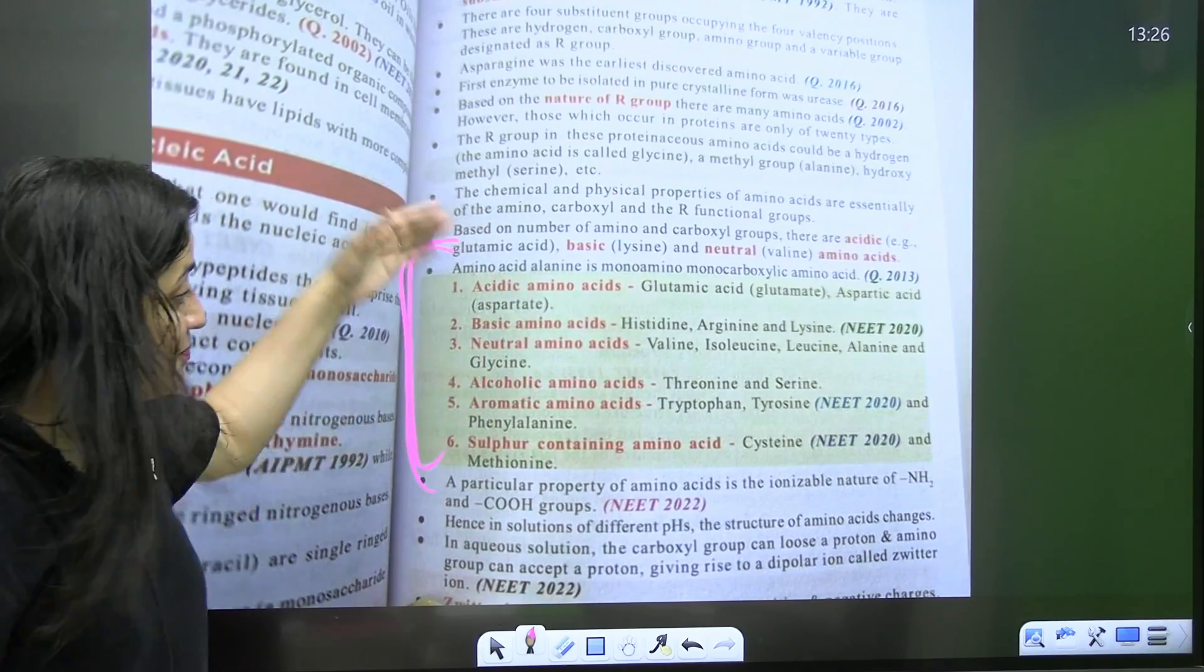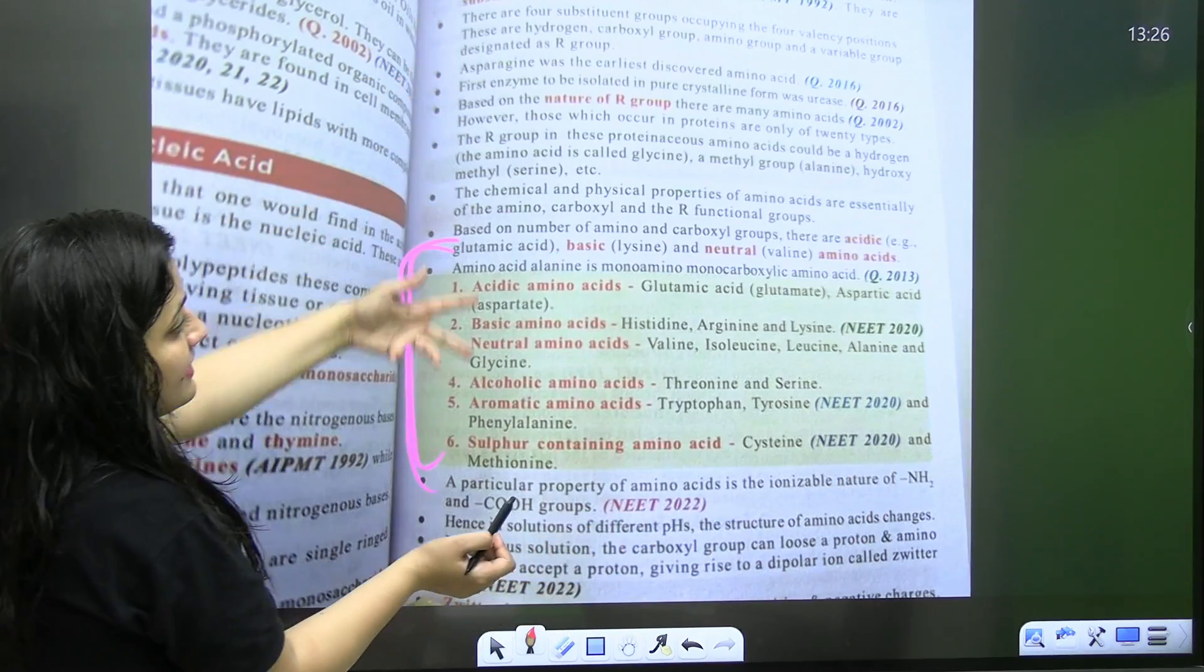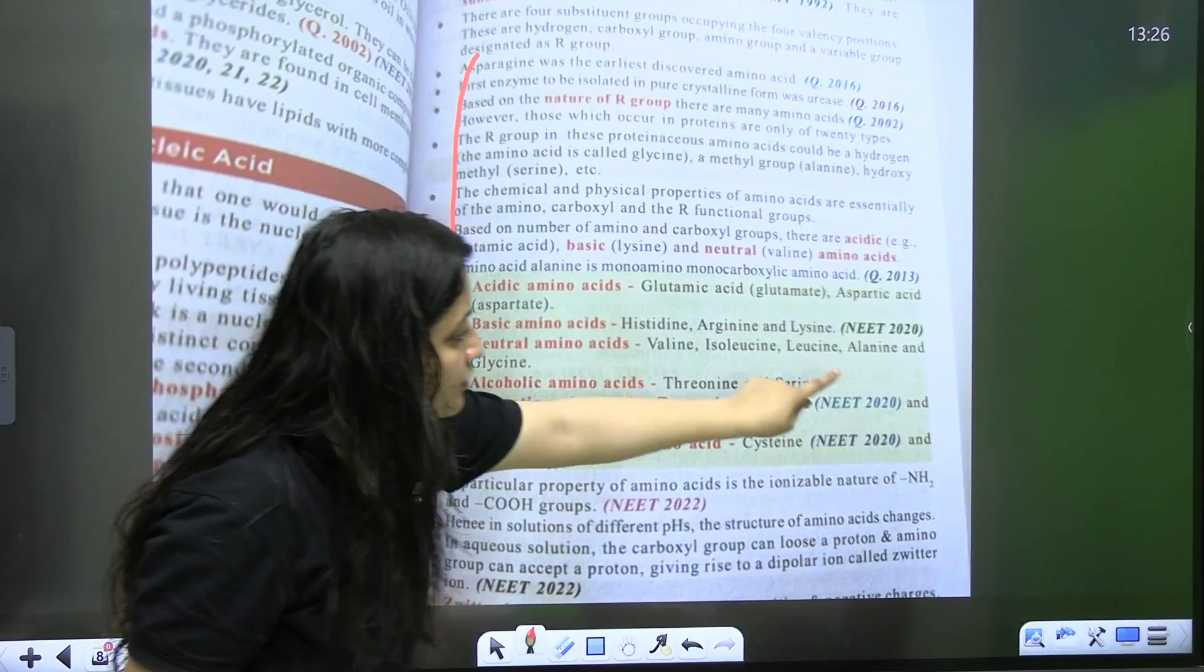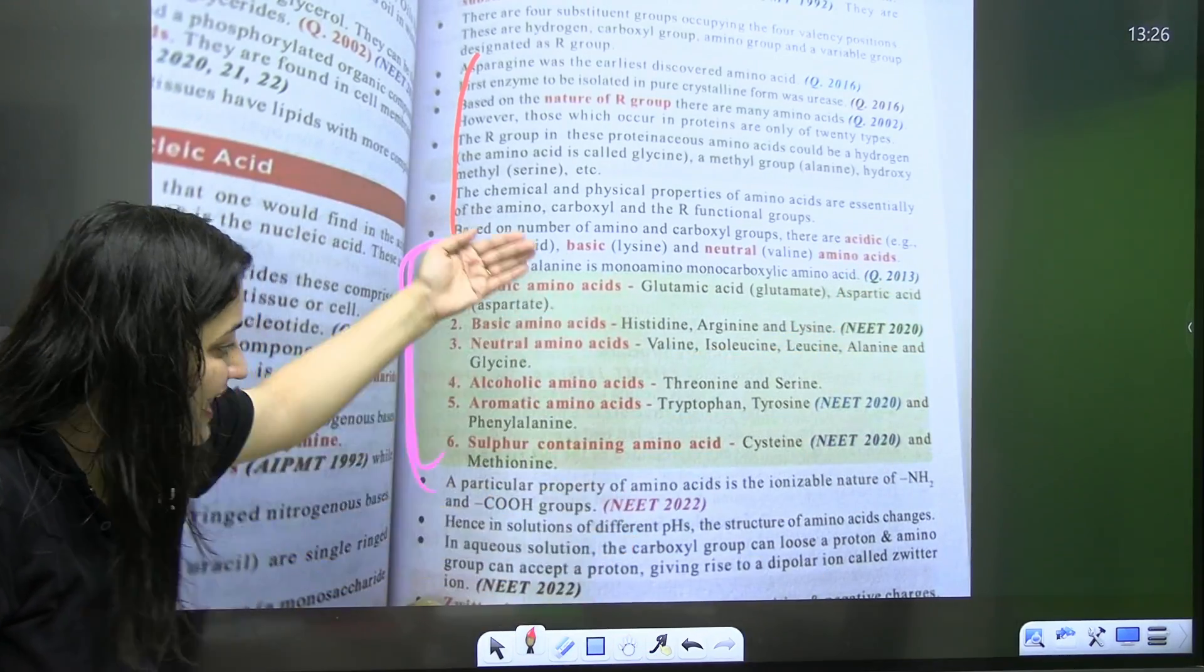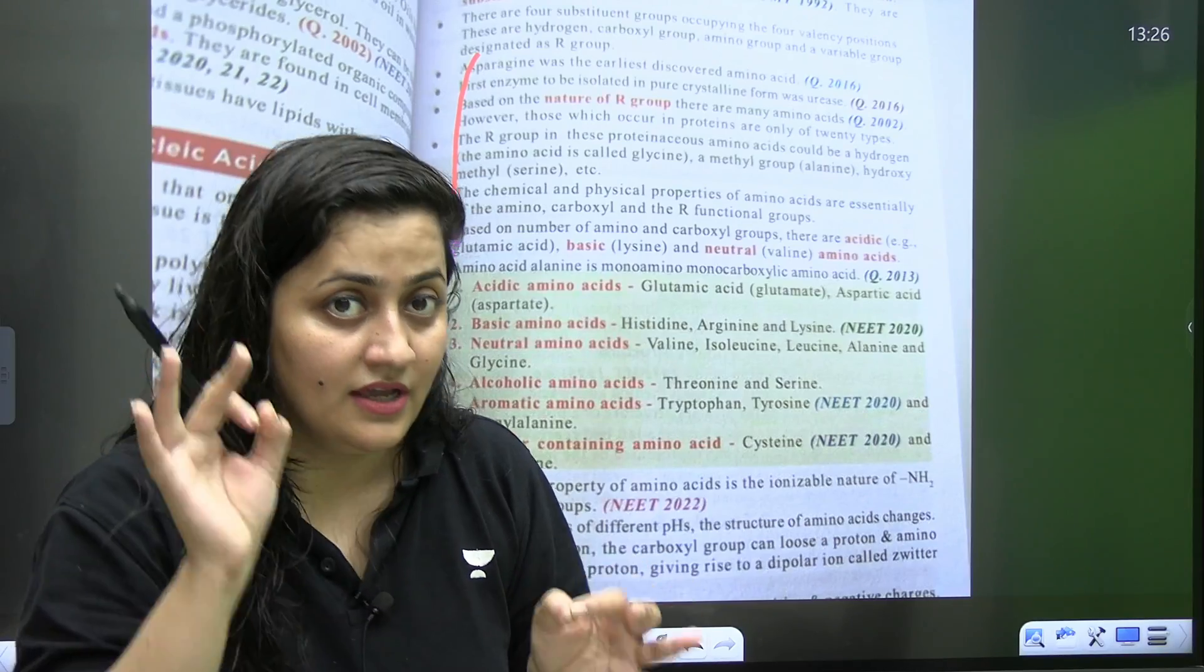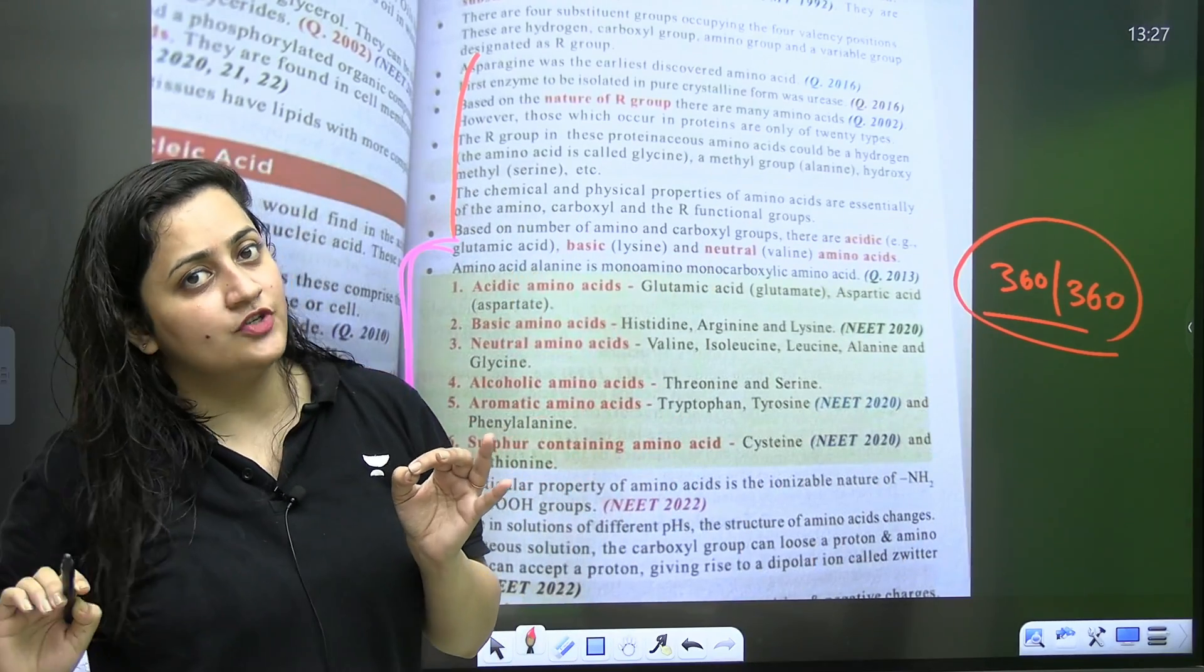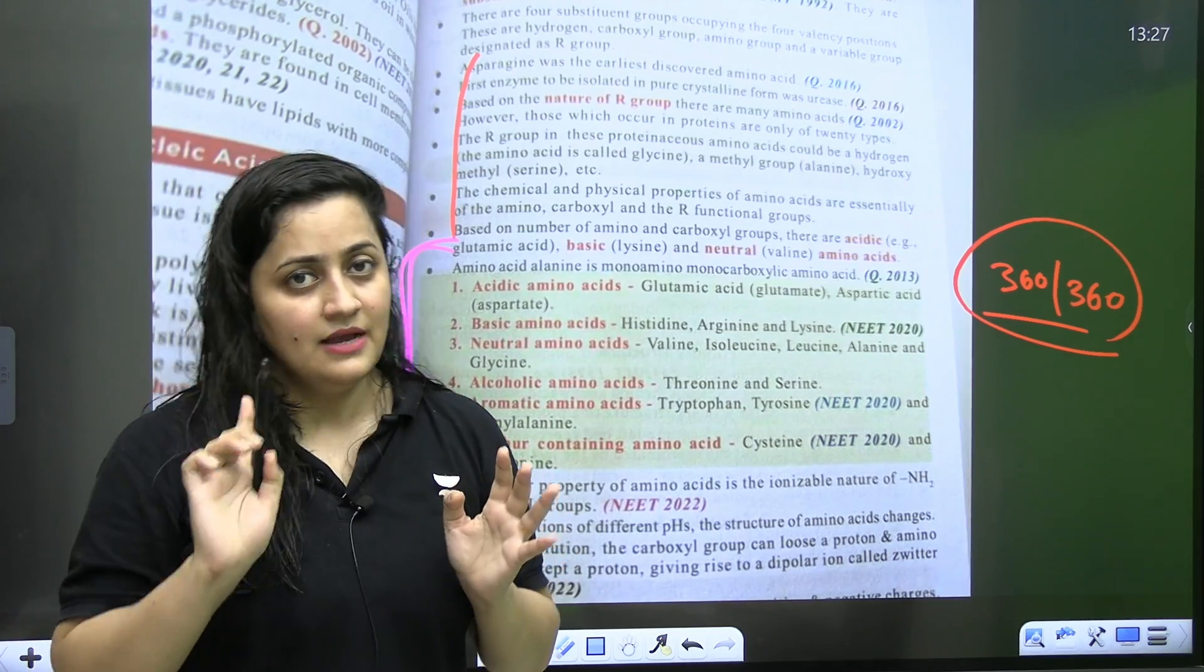I'm not promoting this particular book. Actually, I'm just trying to show that, see, if this is a particular chapter from each and every line, question was there. Sometimes in 2020, sometimes in 2013, sometimes in 2022, like this. So, you have to buy a book. If you want to score 360 out of 360, yes, you have to buy a book in which NCRT-based questions are given and you should practice it with the OMR sheet. That's what you have to do. Please keep it in your mind.